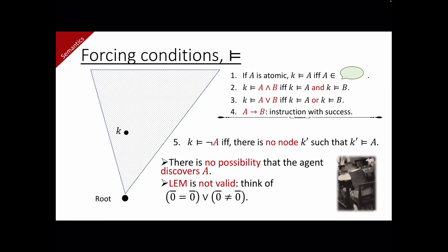We can check that the LEM is not valid. Just think of this disjunction. 0 equals 0 is really a very simple equation. But at the root, this doesn't hold because the root has not any atomic formula. But there is indeed a node at which this holds, so the negation of it is not true anywhere. So this disjunction is not true at the root.